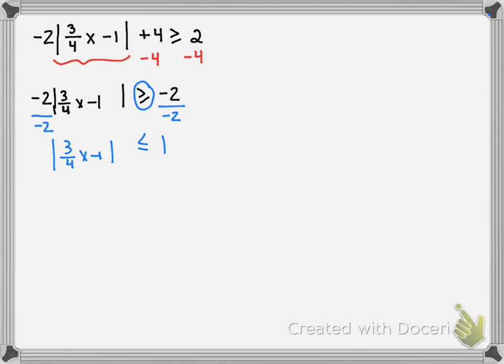And now when we break the absolute value up, we're going to have 3 fourths x minus 1 less than or equal to 1, but also greater than or equal to negative 1. So we're really saying that I could put a negative 1 here and here and break the absolute value up. And I can do that because the absolute value represents the positive and the negative inside that parentheses.